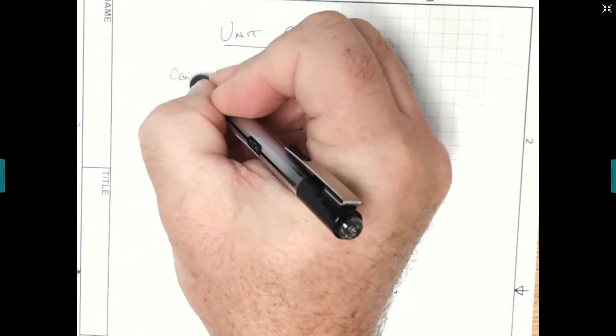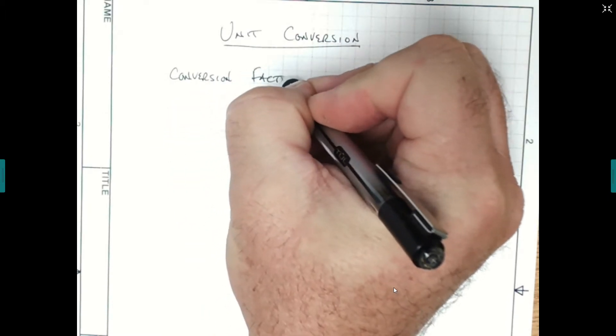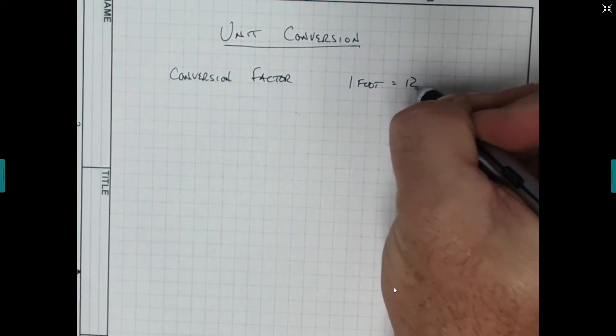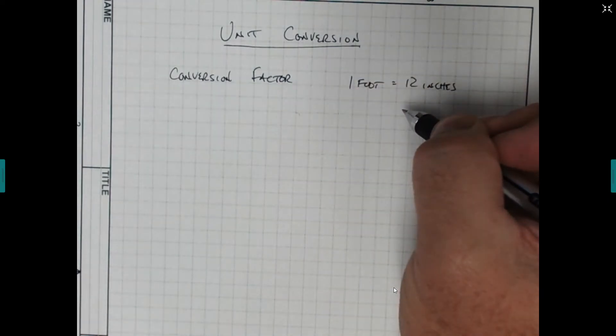The big thing you have to know is something called a conversion factor. It's just an equality. So a simple one might be that in one foot, there are 12 inches. That is a conversion factor or an equality that we can create a conversion factor for.